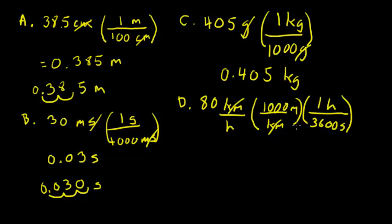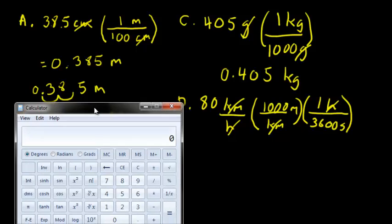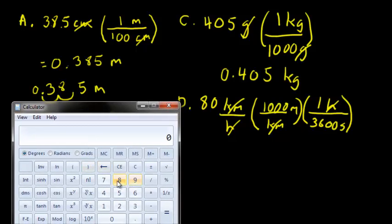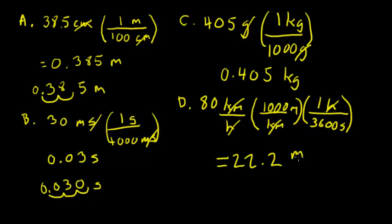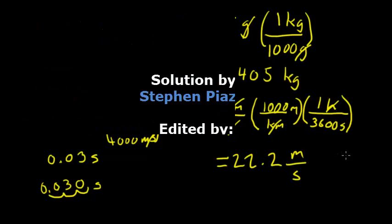And when I do this, I will get kilometers cancelling, get hours cancelling, and I'm going to be left with meters per second. So now if we bring in the calculator to do this computation, what I'm going to be doing is multiplying 80 by 1,000, and then dividing that answer by 3,600. And I see that my answer comes out to be 22.2, and the units I'm left with are meters per second. And that is how you work example 1.4.